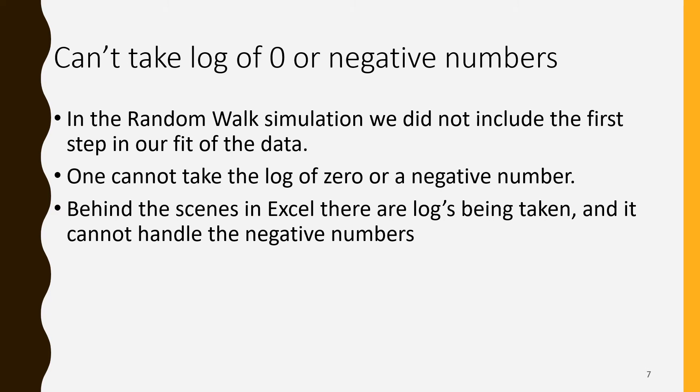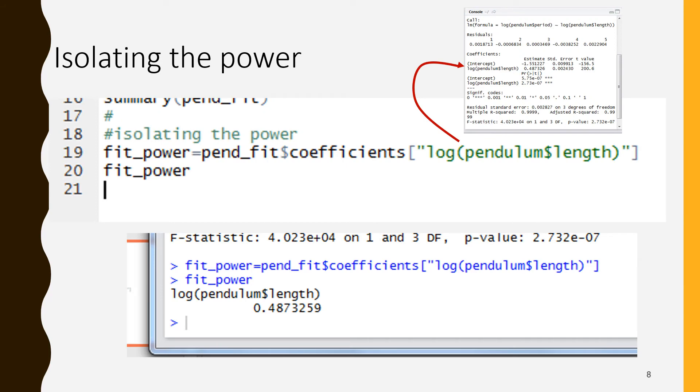Pend_fit is the result of the linear model and the linear model has a lot of parts and we want to extract one part, the power. Pend_fit one of the parts was called the coefficients so we're saying pend_fit dollar sign coefficients. Coefficients was a vector, it had a number of parts and we want one of those parts so that's why we're using the square brackets. In this case what goes in the square brackets is a name and in this case the name as we can see up there in the summary is log parentheses pendulum dollar sign length close parentheses. I always copy it from what's in the console from the summary and never try to figure out what it should be myself. I always copy and paste is the easiest way. That is the convenient way to extract this power of 0.487.